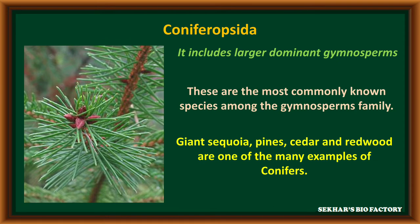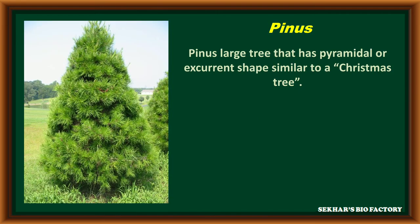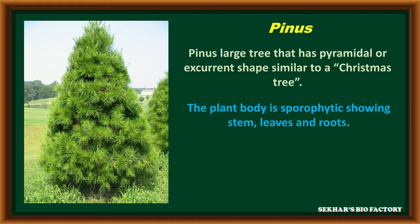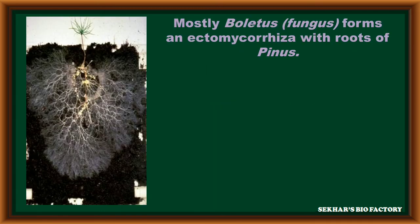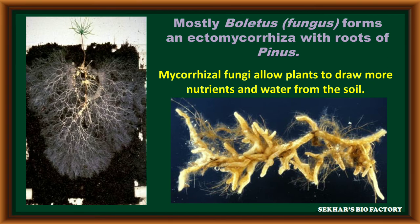Giant Sequoia, pines, cedars and redwood are one of the most important examples for conifers. Pinus is a large tree having a pyramidal or excurrent shape, similar to a Christmas tree. The plant body is sporophytic in nature, showing root, stem and leaves. The sporophytic plant body is monoecious in nature. Boletus is a fungus present on the surface of the root system, called ectomycorrhiza. This mycorrhiza helps to absorb water and nutrients from soil.